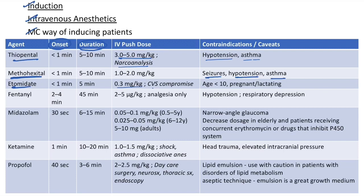Etomidate is used in the dose of 0.3 mg/kg and is used in patients with cardiac system compromise. It is contraindicated in children less than 10 years of age and in pregnant and lactating women. Fentanyl is an opioid with onset of action of 2 to 4 minutes and duration of 45 minutes. The dose of fentanyl is 2 to 5 microgram per kilogram. Fentanyl provides analgesia only — there is no amnesia with fentanyl. Contraindications are hypotension and respiratory depression.